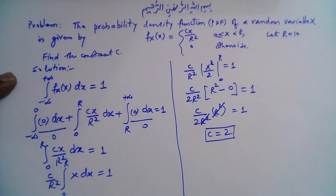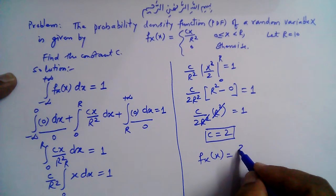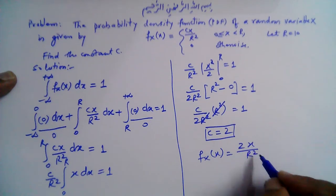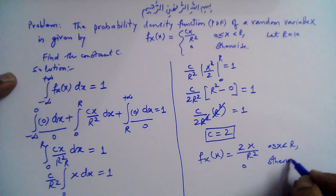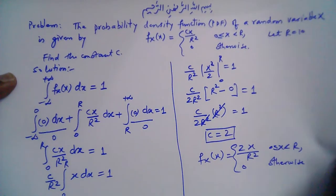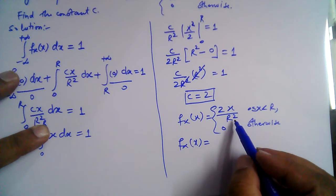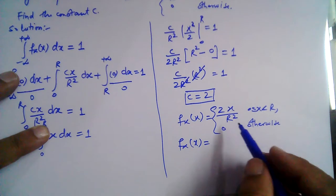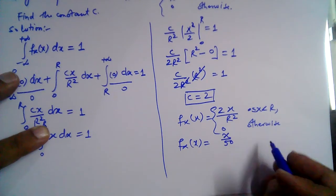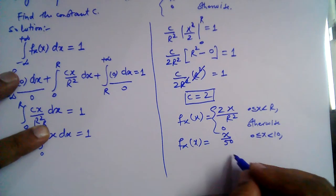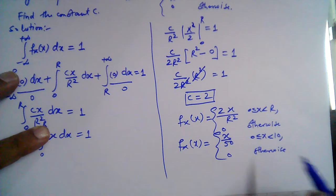The PDF is therefore f(x) = 2x over r squared, for 0 ≤ x < r, and 0 otherwise. Substituting r = 10, r squared = 100, so 2 over 100 = 1 over 50. The final PDF is f(x) = x over 50, for 0 ≤ x < 10, and 0 otherwise. This completes the solution.